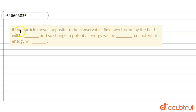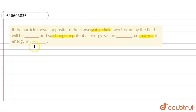Hello everyone. If the particle moves opposite to the conservative field, work done by the field will be dash, and so change in potential energy will be dash — that is, potential energy will...